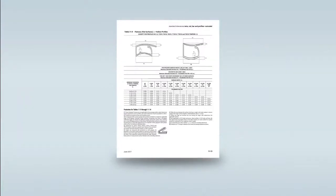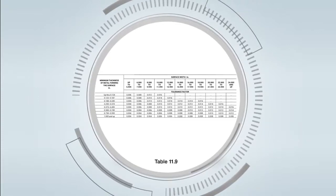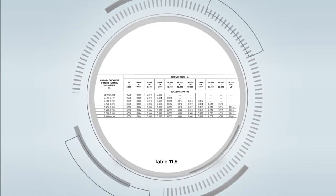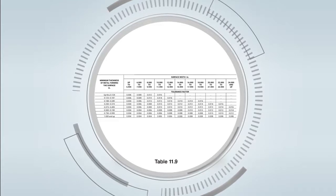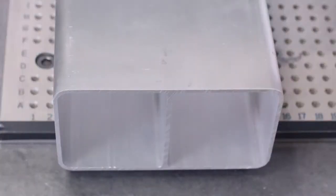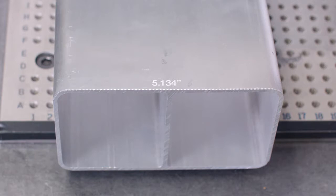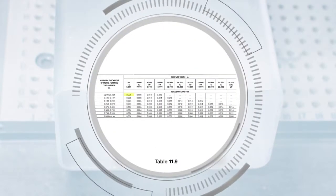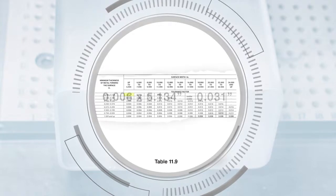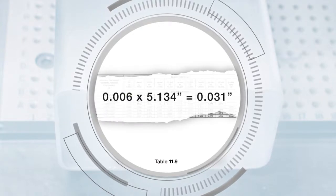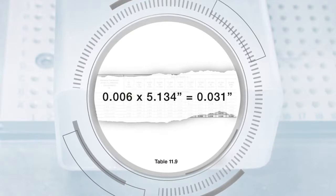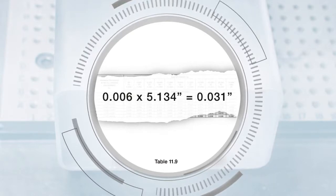Next, we'll discuss flatness for hollow profiles. Tolerances for these profiles, along with square or rectangular tubes larger than 6 inches, can be found in Table 11.9. For this 2-void hollow profile, the width of the surface excluding the corner radius is 5.134 inches and the wall is a uniform thickness of 118 thousandths of an inch. Using Table 11.9, the allowable flatness tolerance is 6 thousandths of an inch per inch of width. Multiplying 6 thousandths by 5.134 inches, the allowable flatness tolerance across the full width is 31 thousandths of an inch.